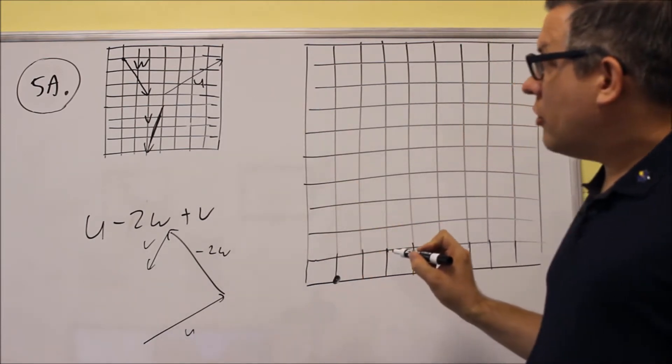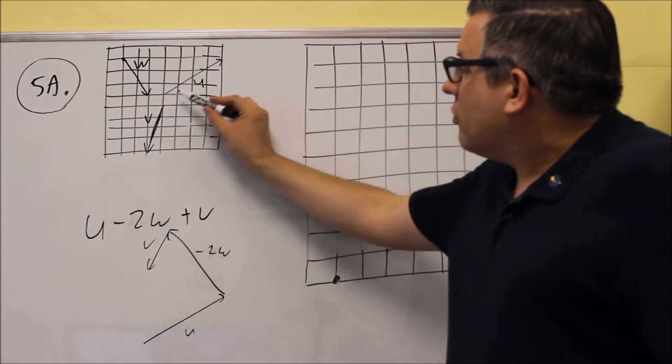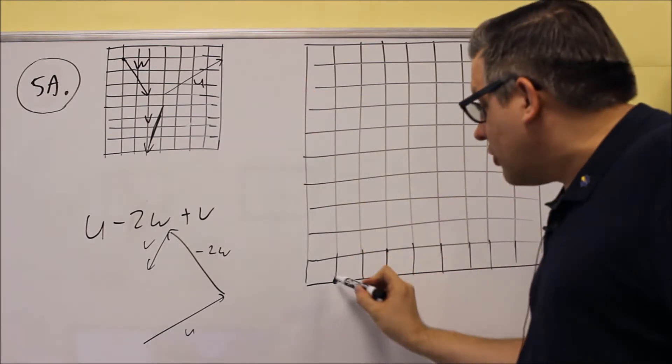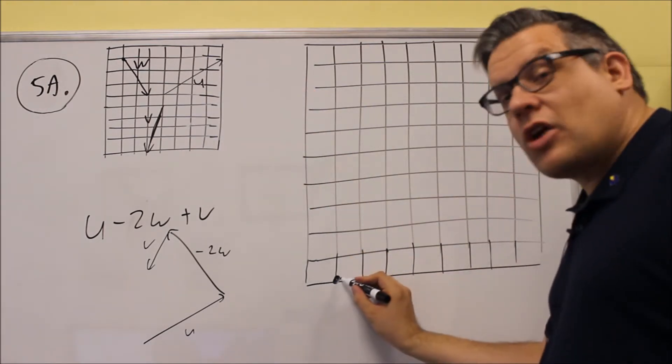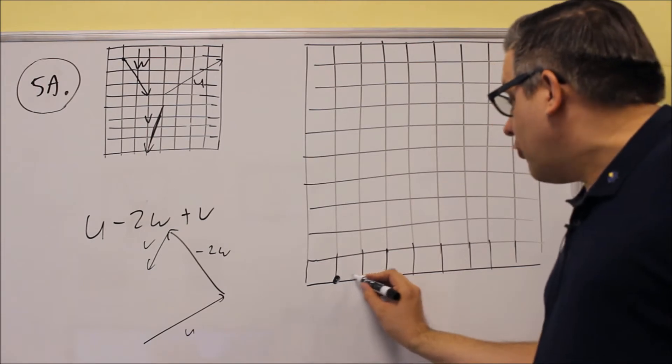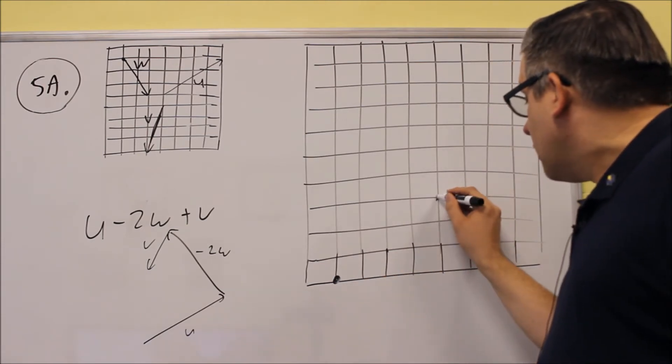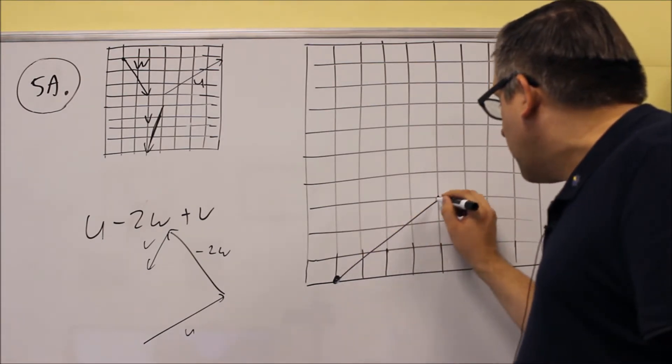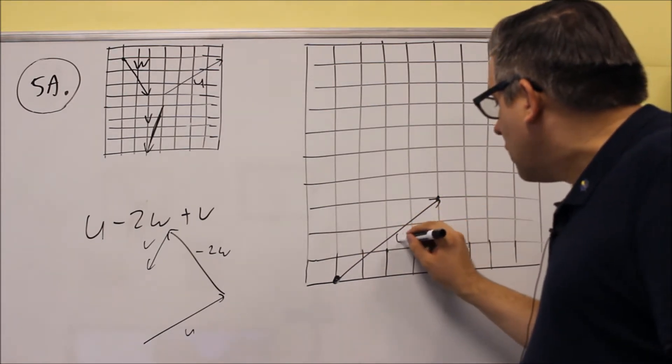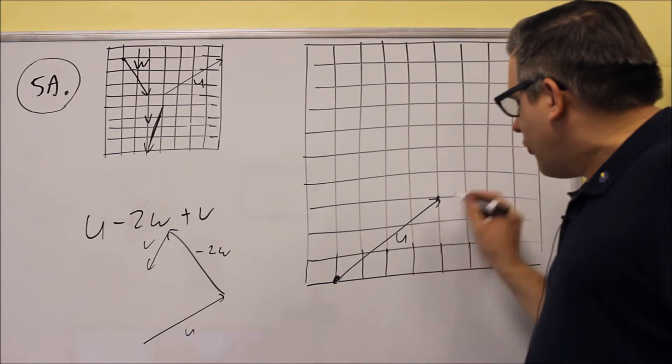And the U goes four places to the right and up 3. So we have to do exactly the same thing here. If this is our starting point, we've got to go four places to the right and up 3 to here, and we're going to draw that in, this is going to be our U. So that's our first one that we did.